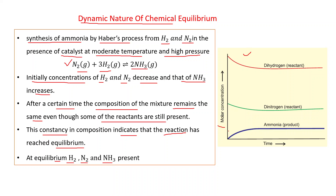From the molar concentration vs. time diagram for Haber's process: initially the concentration of dihydrogen and dinitrogen is maximum; as time passes their concentrations decrease. After a certain time, concentrations of reactants as well as products become constant — this straight line represents the state of equilibrium. At equilibrium, H₂, N₂, and NH₃ are all three present.